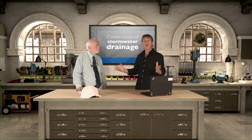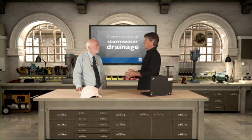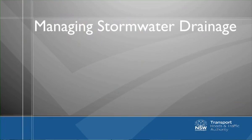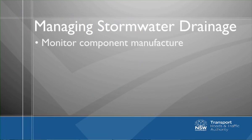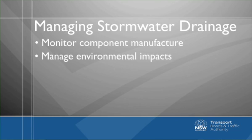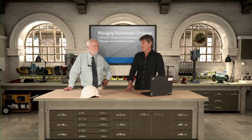Let's get a general overview of what we're talking about one by one. Well, firstly, we need to understand that the manufacture and supply of components for stormwater drainage systems needs to be carefully monitored. We also have to understand that it's important to manage the environmental impacts of drainage construction, so we need to understand the process of the installation of drainage, but also managing the environmental impact.